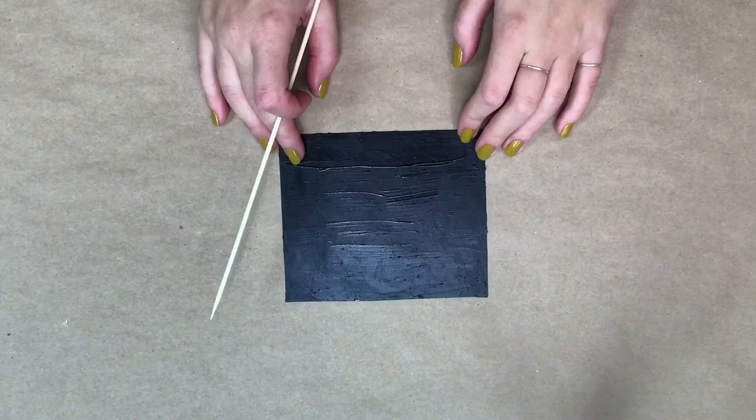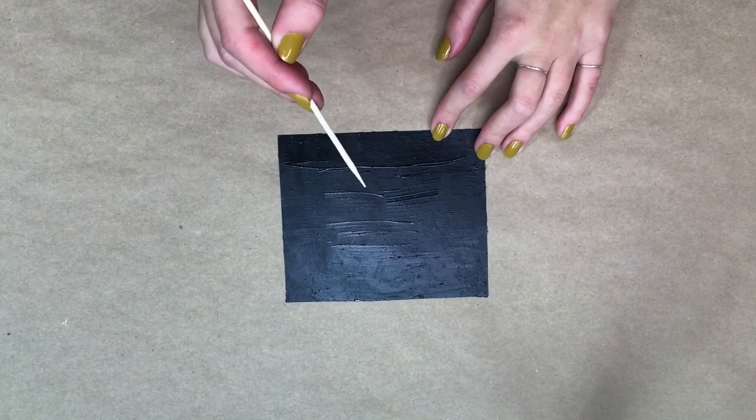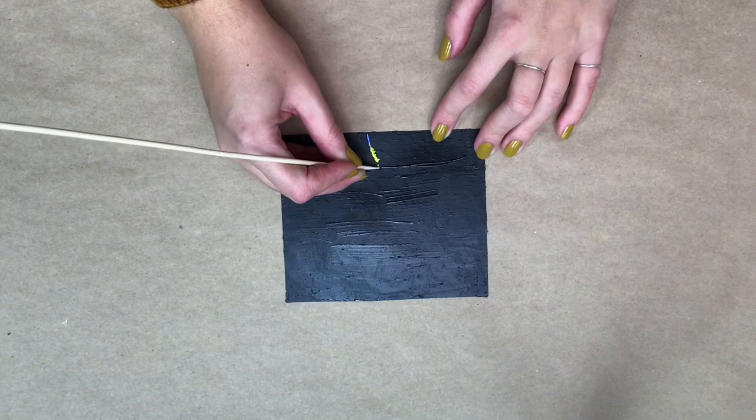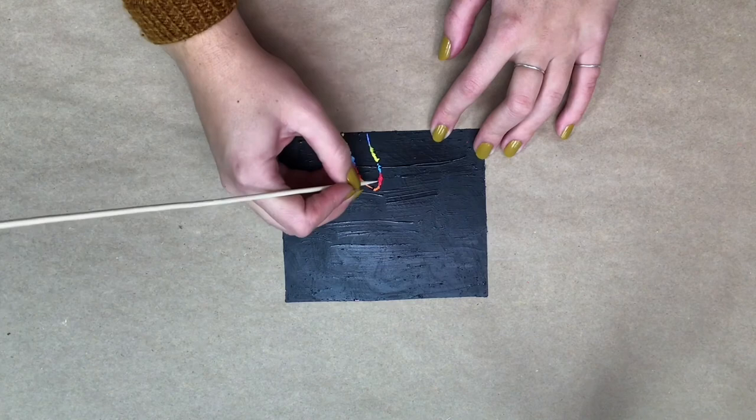Once your paint has dried, this is when you're going to use your skewer. So you're going to hold your skewer like you would a pencil and start pressing it into the paper and dragging it across. And as you can see here, the colors that you drew before are starting to show through. And so you're going to be creating your own abstract scratch art here.